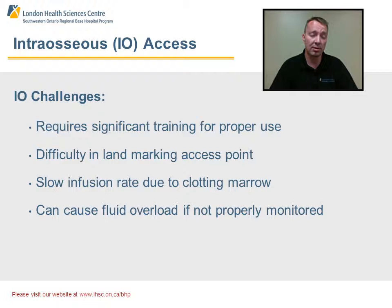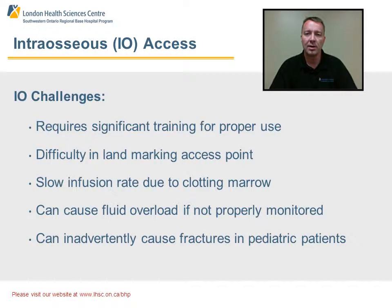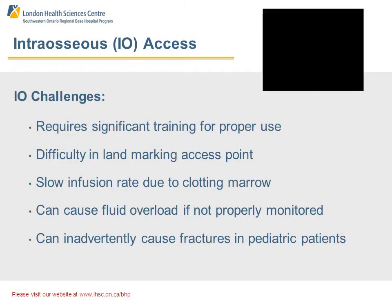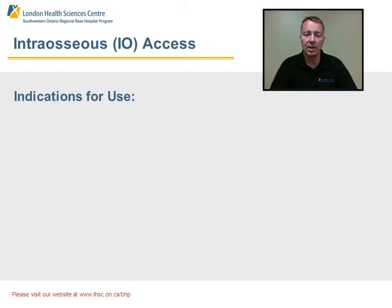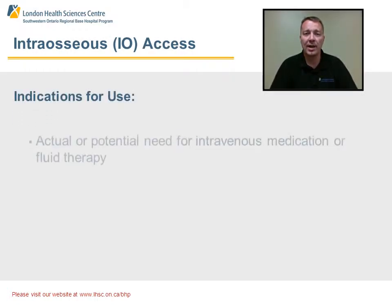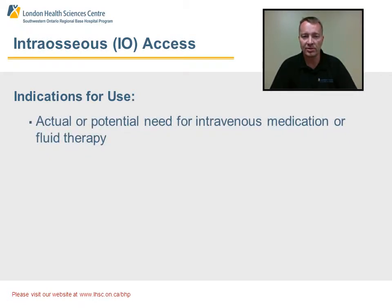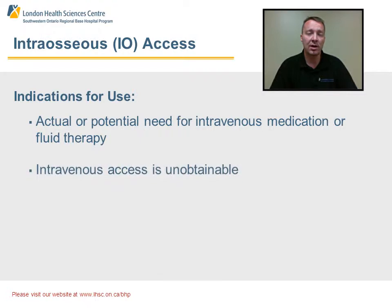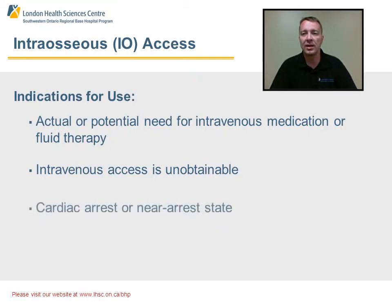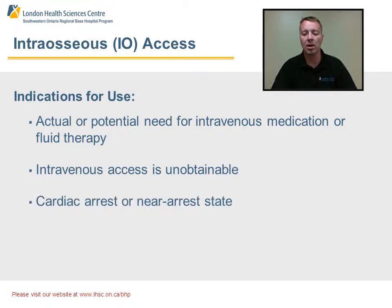There can also be trauma as a result of actually fracturing the tibia, which mostly happens in our pediatric patient set. So what are our indications for use for an IO needle? The actual and/or potential need for fluid and/or medication administration where an IV is unobtainable — for whatever reason, fractures, amputations, and so on — and the patient has to be in a cardiac arrest state or near cardiac arrest state.